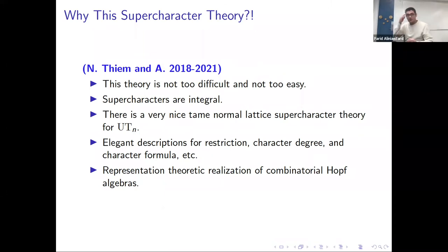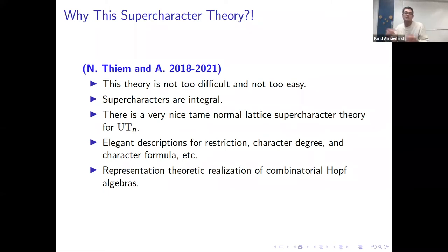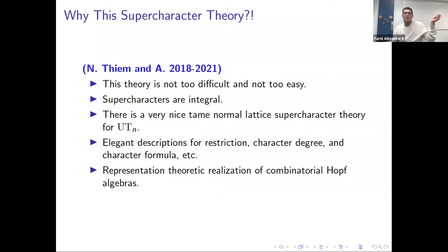This normal lattice supercharacter theory has good properties. Most supercharacter theories we know are either too difficult or too easy to work with, but this one is in the middle. The supercharacters are integral — their values on group elements are integers, not just complex numbers. Also, for unipotent upper triangular matrices, while we can't find a character degree formula for irreducible characters, we can do so for the normal lattice supercharacter theory.